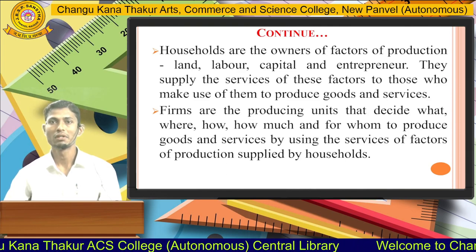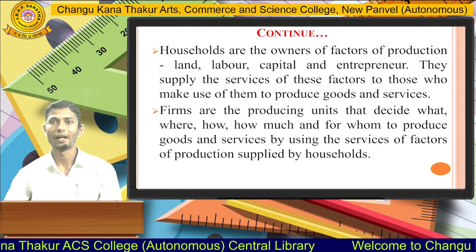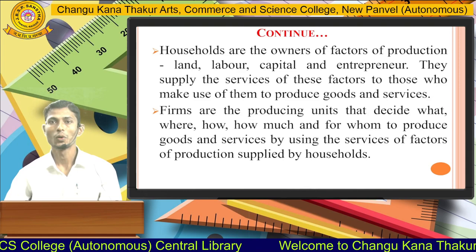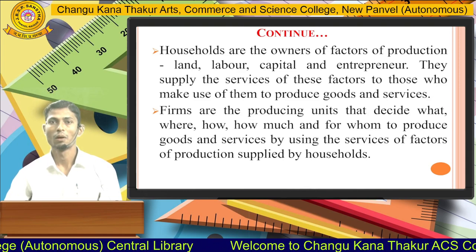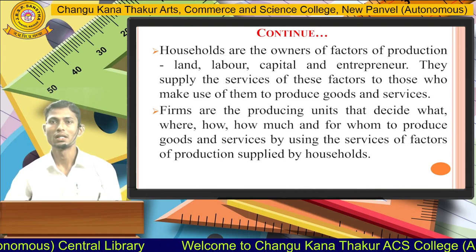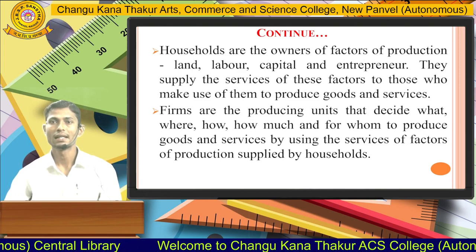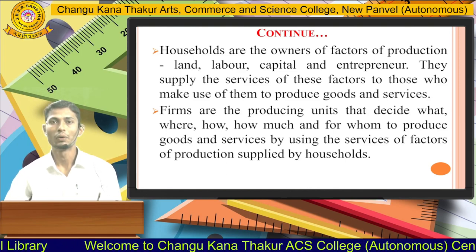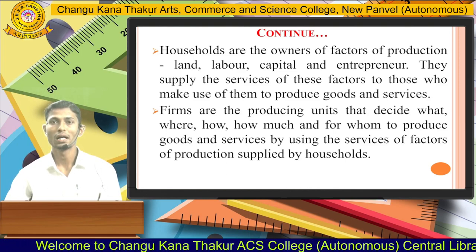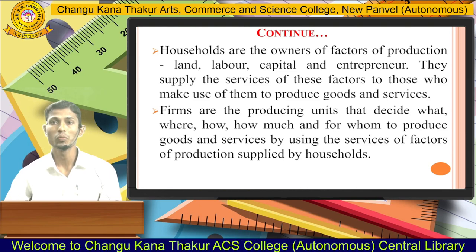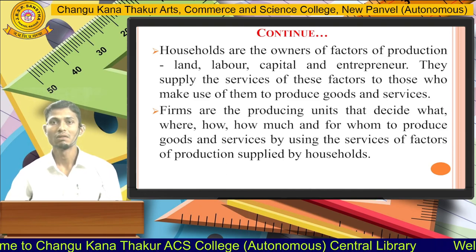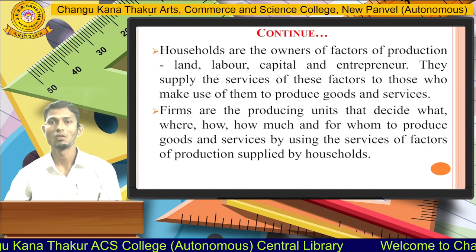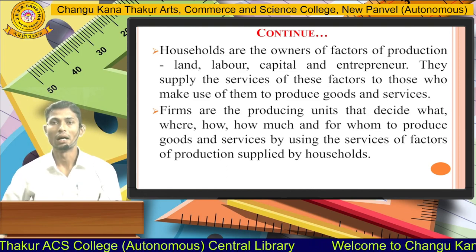Households supply the services of these factors to those who make use of them to produce goods and services. Firms are the producing units and decide what to produce, where to produce, how to produce, how much to produce, and for whom to produce goods and services, by using the services of factors of production supplied by the households.